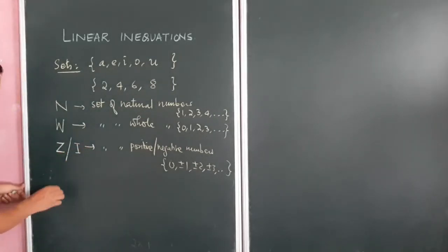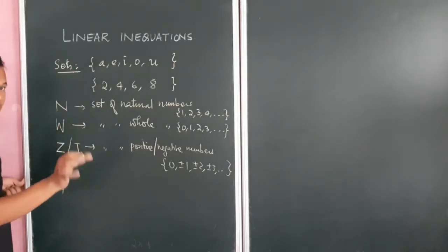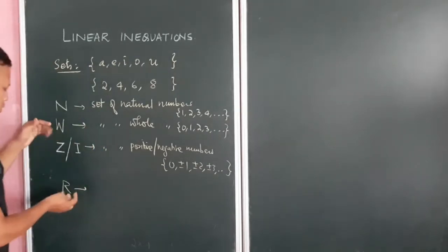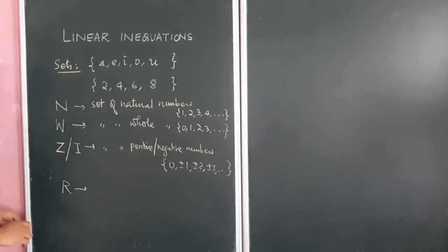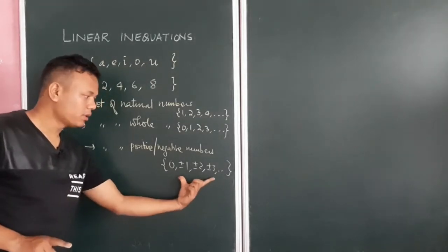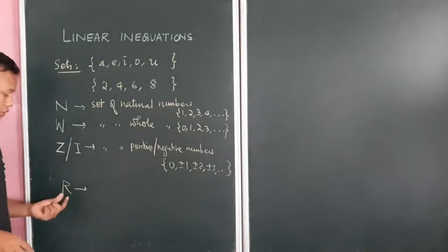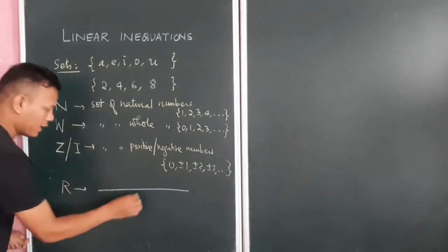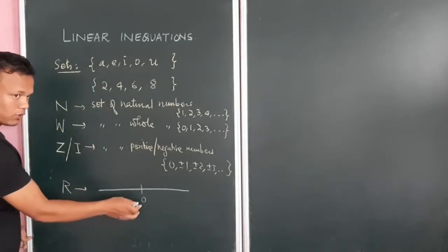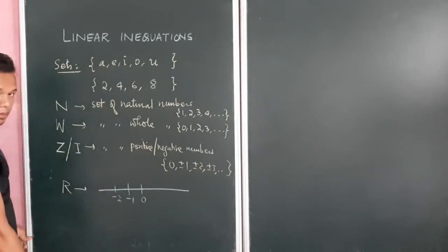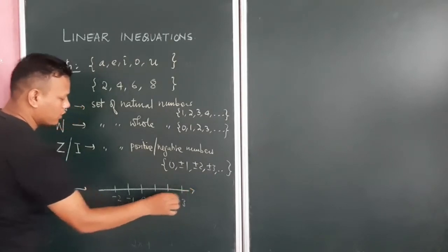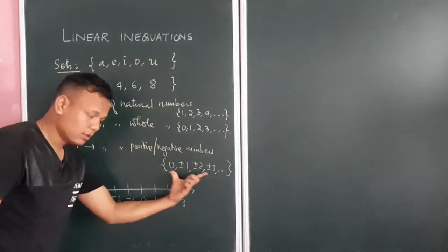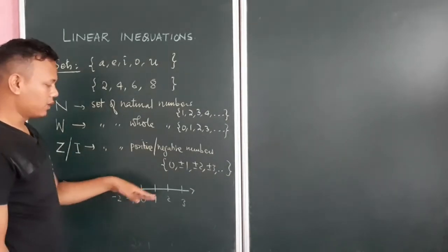The last one that is very important for class 8 linear inequations is real numbers. Real numbers means the set of all possible numbers — basically a combination of all the sets. Real numbers can never be written inside curly brackets. Instead, the set of real numbers is always represented by a line called the real line. On this line, 0 is in the middle, negative numbers extend to the left (-1, -2), and positive numbers to the right (1, 2, 3). This is called the real line.